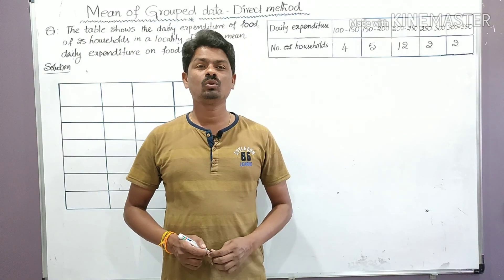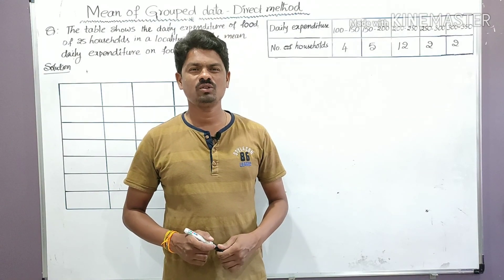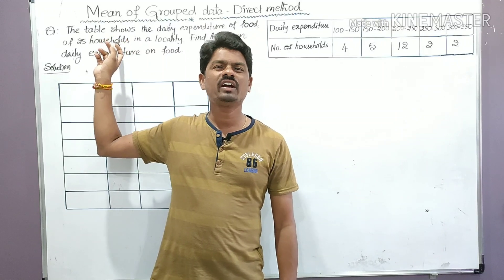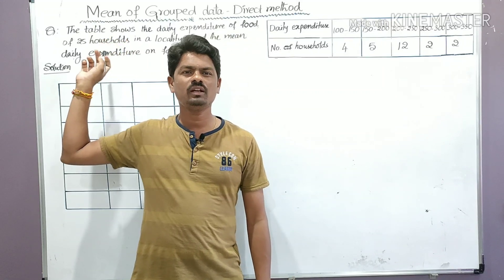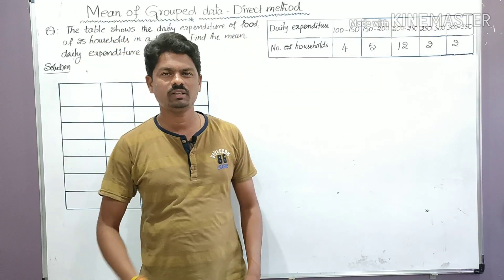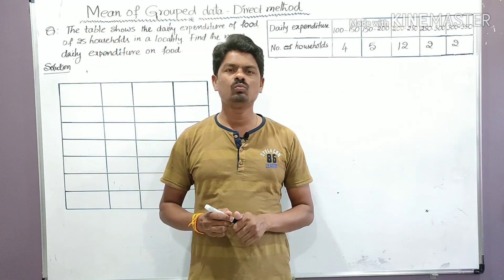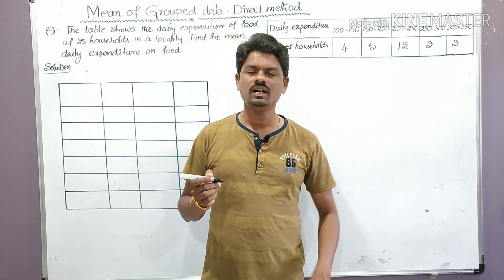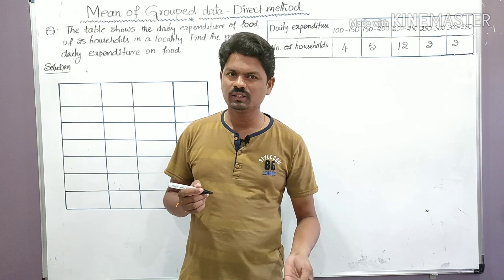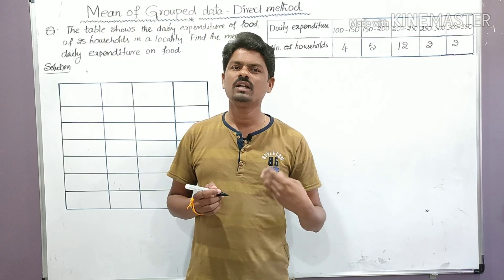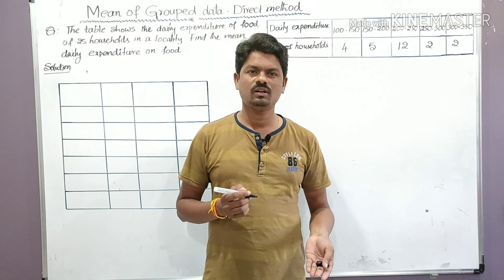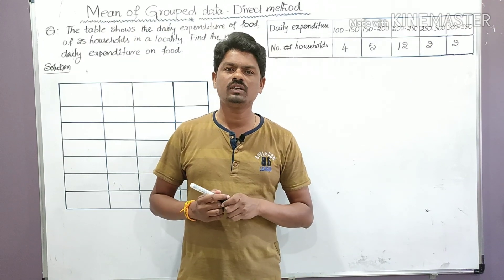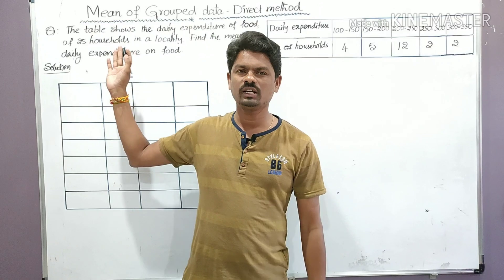Hello students, welcome to Learn More Math. Today we are going to learn about Statistics Part 3 - finding the mean of grouped data using the direct method. We have three methods to find the mean of grouped data: the direct method, the assumed mean method, and the step deviation method.